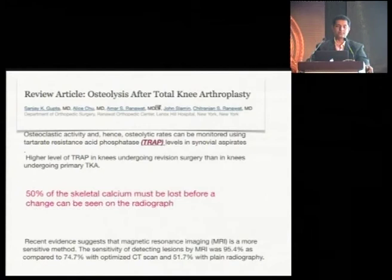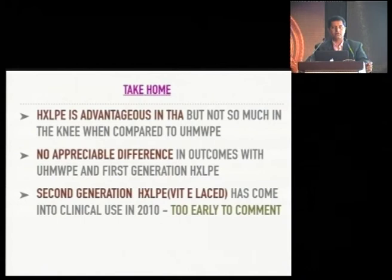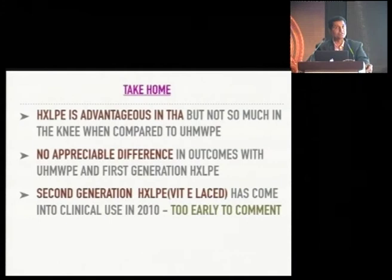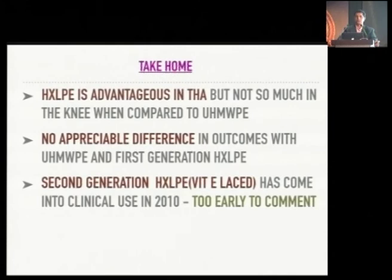Take-home messages: Highly cross-linked poly is advantageous in total hip arthroplasty but probably not as much in the knee. There are no appreciable differences in outcome between ultra-high molecular weight polyethylene and first generation highly cross-linked poly. The second generation highly cross-linked poly blended with vitamin E has been in clinical use since 2010, and it is still too early to comment on its long-term benefits. Thank you.